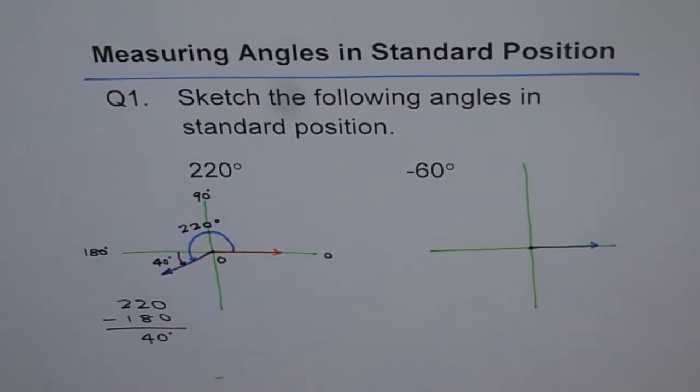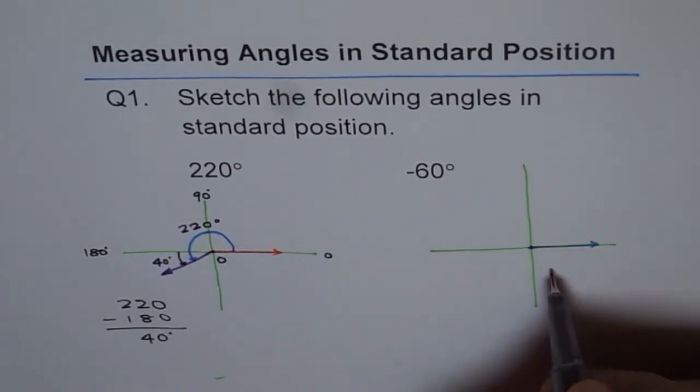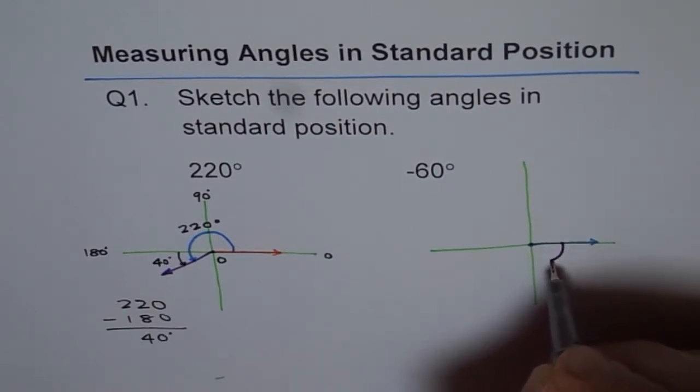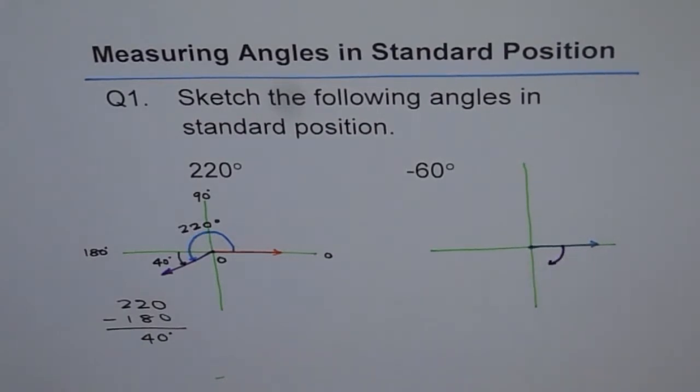Now minus 60. Minus means what? Minus means clockwise. So it is clockwise 60 degrees. That seems to be 60 degrees.